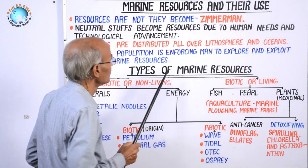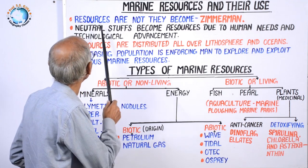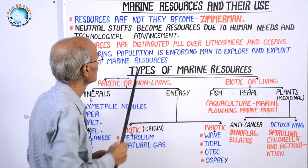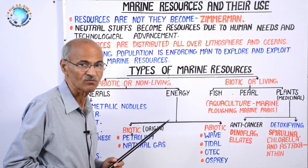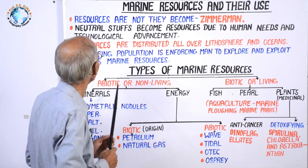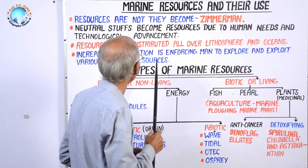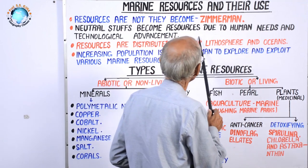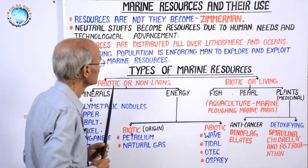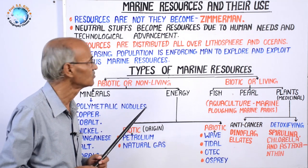Zimmerman, a famous geographer, propounded that resources are not — rather they become. When things are identified for human use, they become a resource. The remaining things found in the environment are called neutral stuff, which have not been identified by man. These neutral steps become resources due to human needs and technological advancement. It is only technology that converts neutral stuff into a resource.